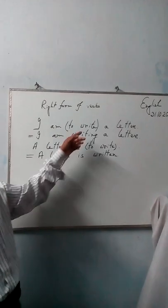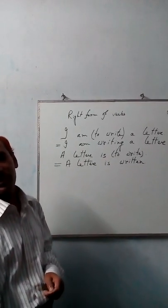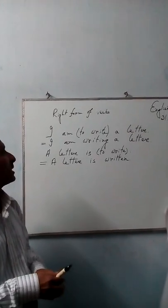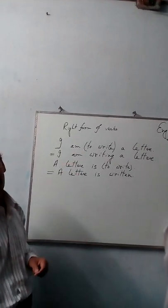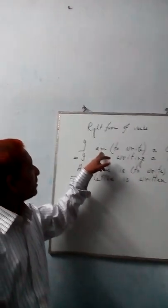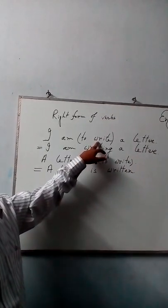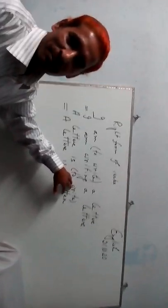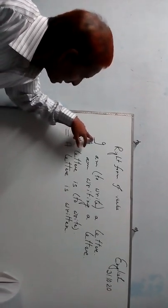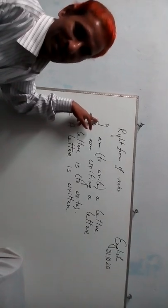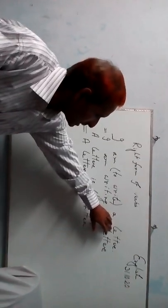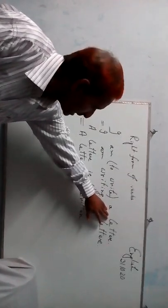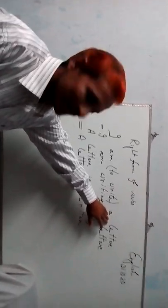There is a difference between these two sentences. You should mark carefully. Both sentences have the same structure: subject plus auxiliary verb plus main verb. In the second sentence there is also subject plus auxiliary verb plus main verb. But the first sentence is in active voice, and there is an object in this sentence. If there is an object in present continuous tense, or in any tense, then we shall use active voice.